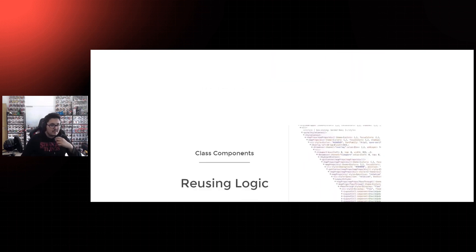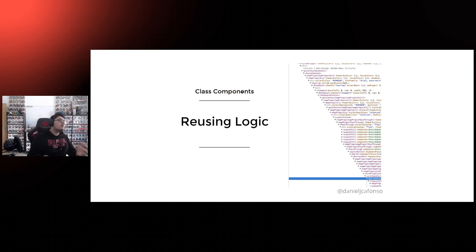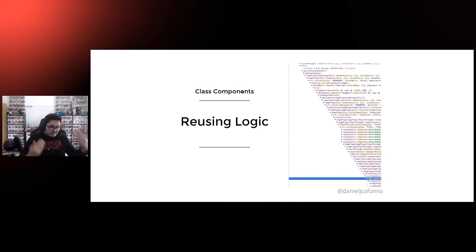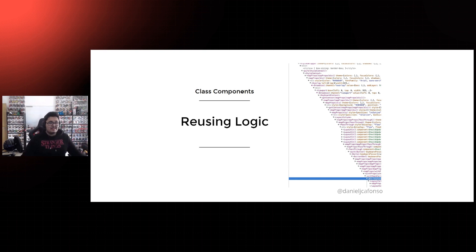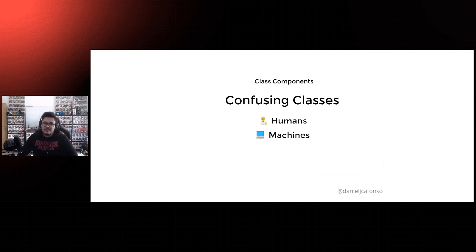Then we had the issue of reusing logic. With class components there was no way to reuse stateful logic between components. At a certain point we had mixins, but they were deemed unsafe, and we had patterns like render props or higher-order components. But usually these patterns come at the cost of code readability and adding extra layers to your code — what is called 'wrapper hell.'